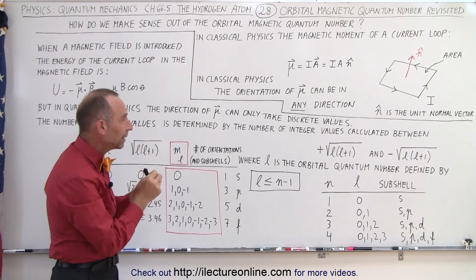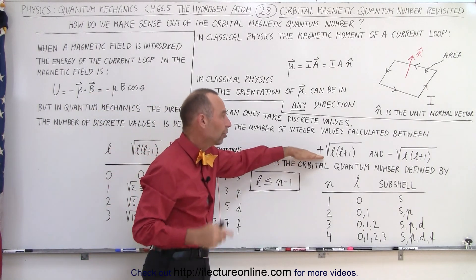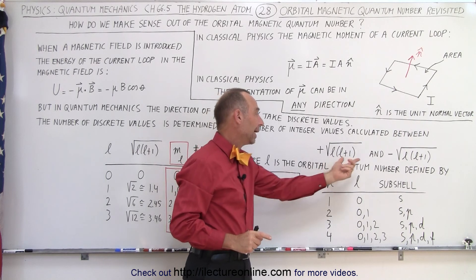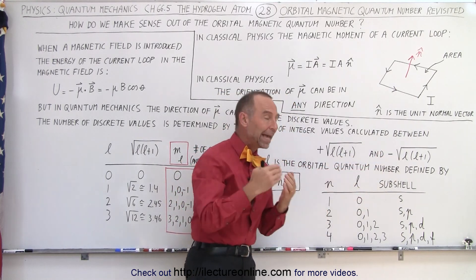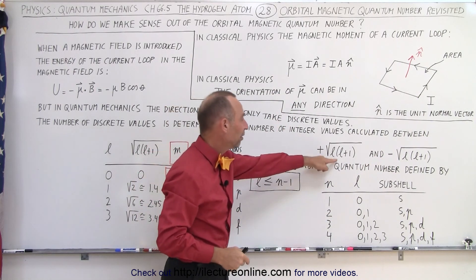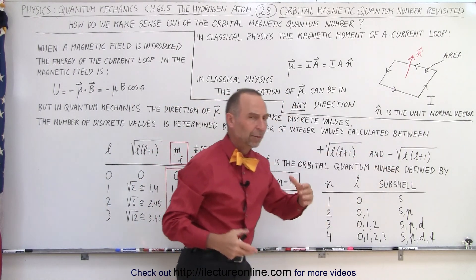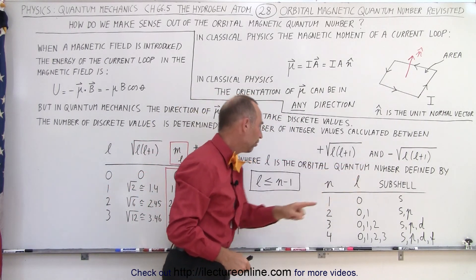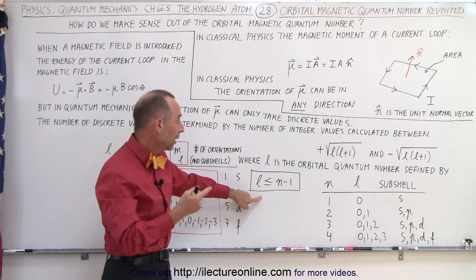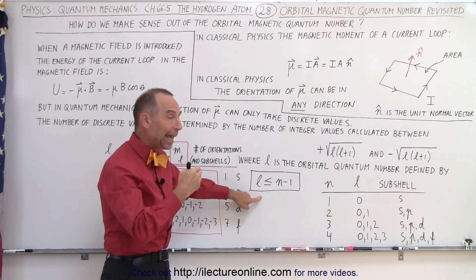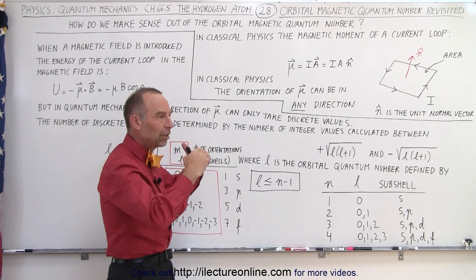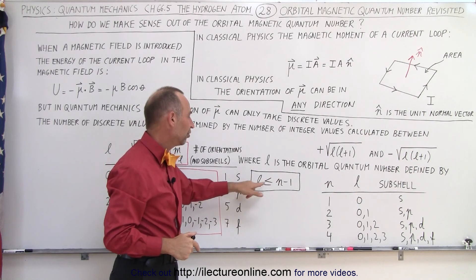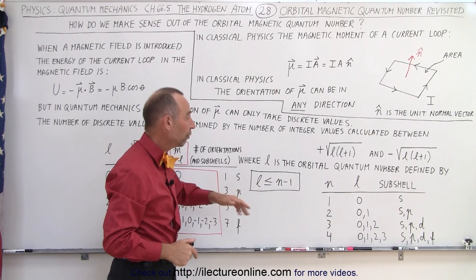The number of possible values can be calculated. It will be an integer value between the maximum value and the maximum negative value — so any integer between those two limits. L is the orbital quantum number, which is defined as follows: L will always be one less than N, which is the principal quantum number associated with the energy level in the hydrogen atom. So if N equals 1, L can be 0. If N equals 2, L can be 0 and 1, and so forth.